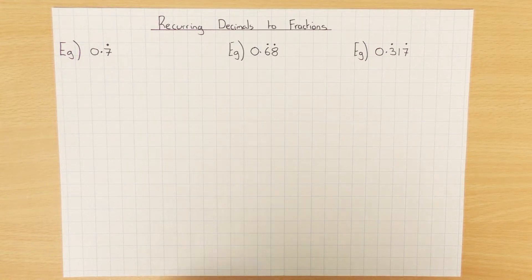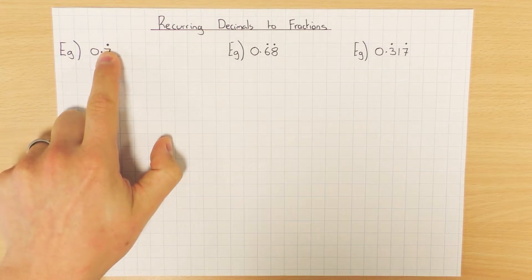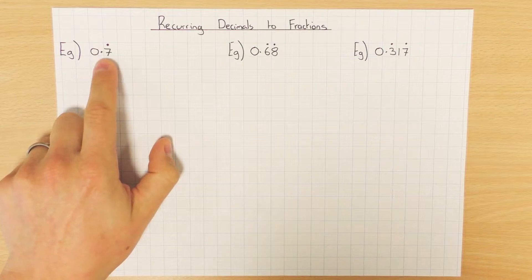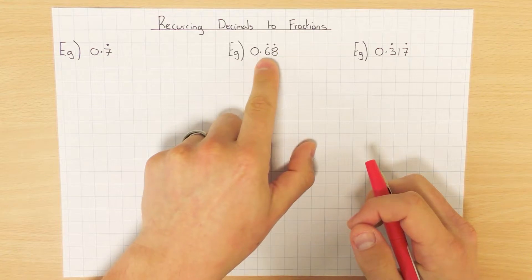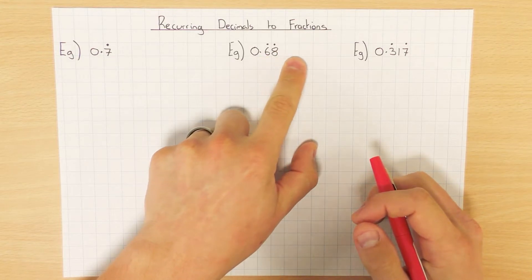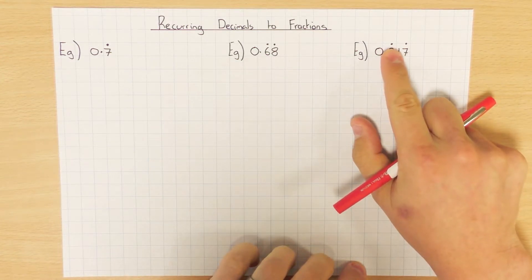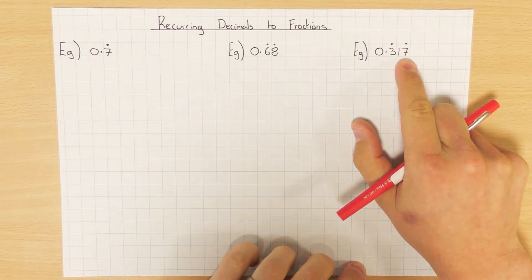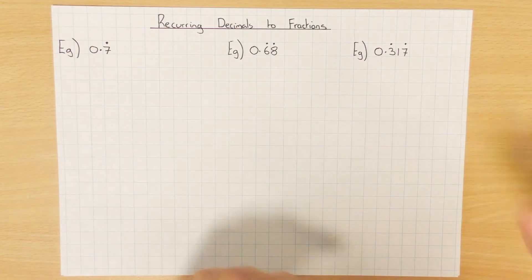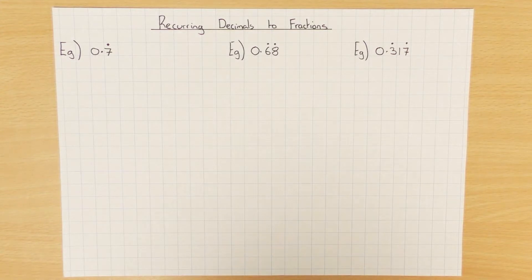So what is a recurring decimal? A recurring decimal is something like this where you'll notice there is a little dot above the number, and all that means is it's 0.777777. We have two dots here, so this would be 0.6868686868 — these are the two numbers that reoccur. And in this one we've still got two dots but there's a number in between, which means this whole thing is reoccurring, so it would be 0.317317317 etc. And we need to be able to convert these into a fraction.